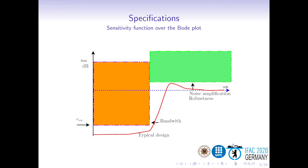To perform closed-loop shaping, it is necessary to define the desired shape for the closed-loop transfer function. For example, in the case of the sensitivity function, it must take small values in the low-frequency range, implying a small steady-state error — graphically shown as being below the orange rectangle in the figure. Additionally, in the mid and high frequency range, the sensitivity function must not take big values, as these would reduce robustness, visualized through the bounds defined by the green rectangle.